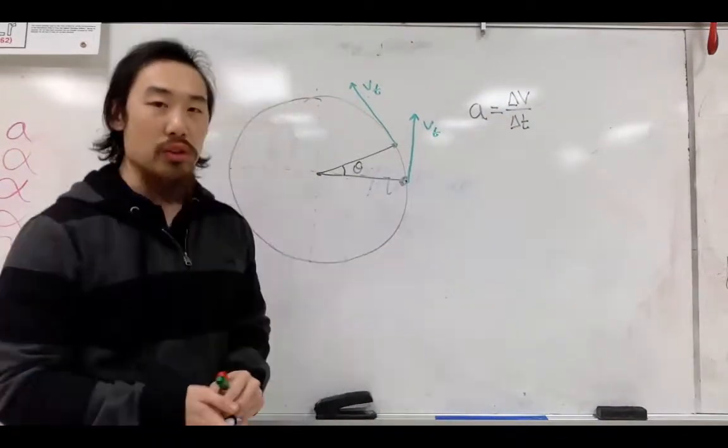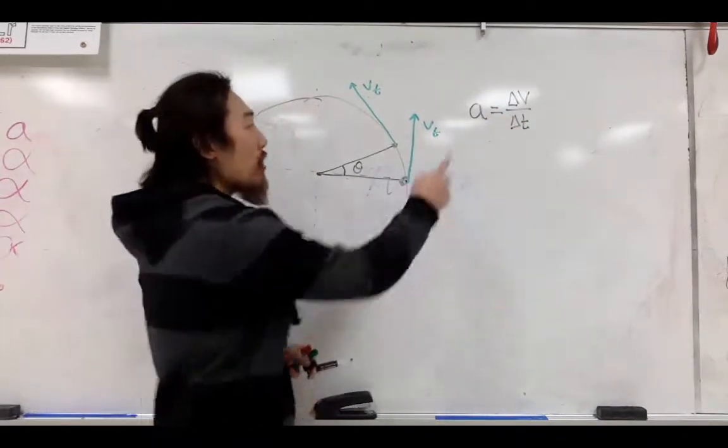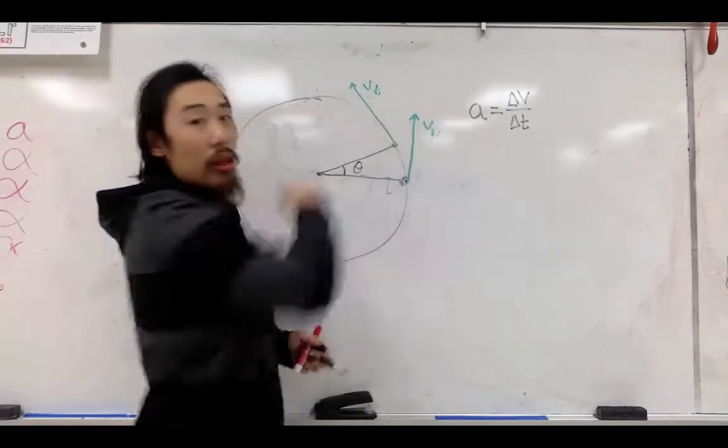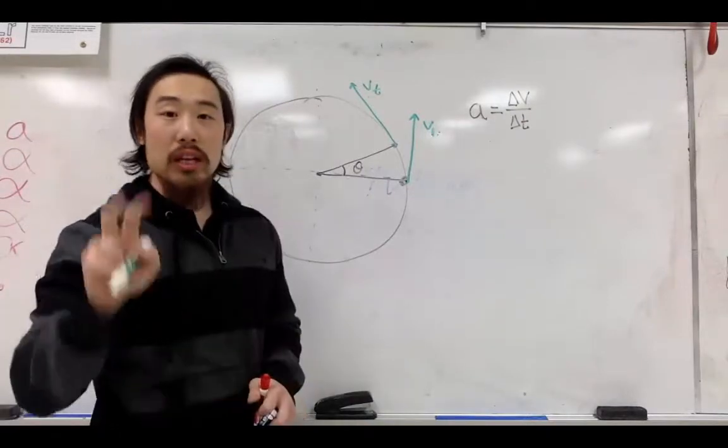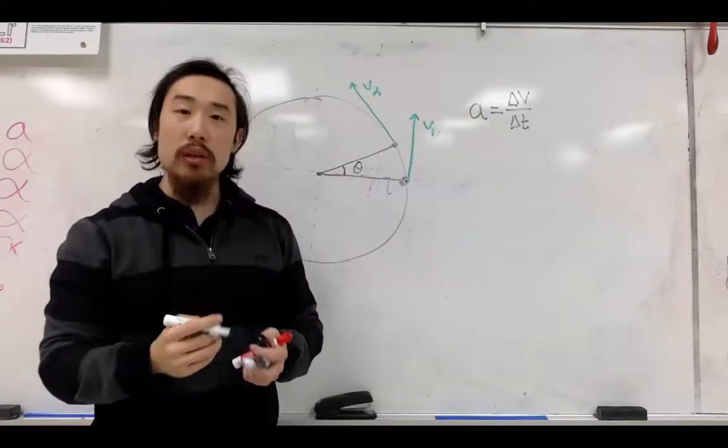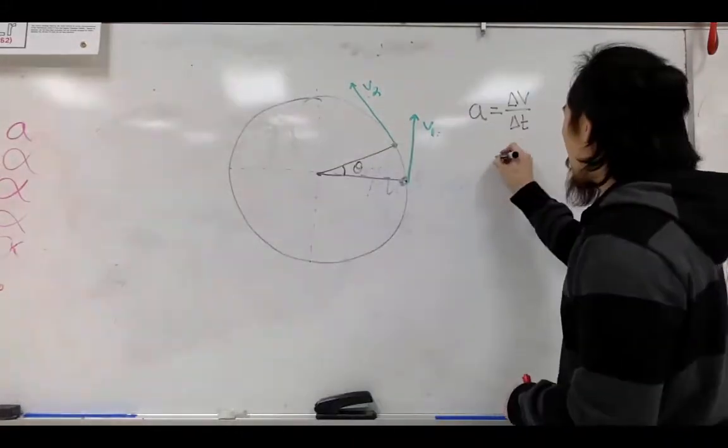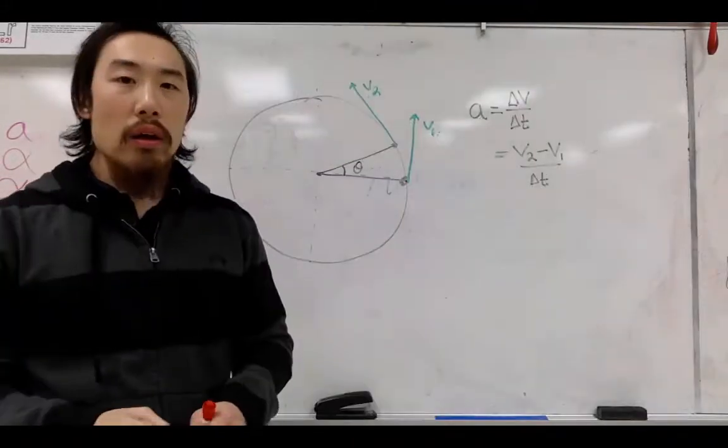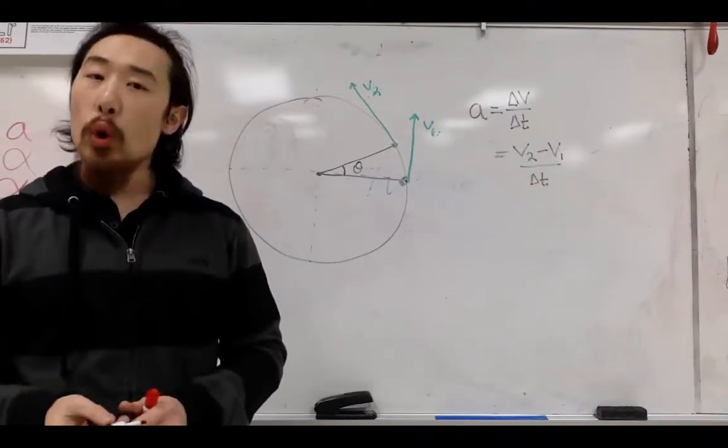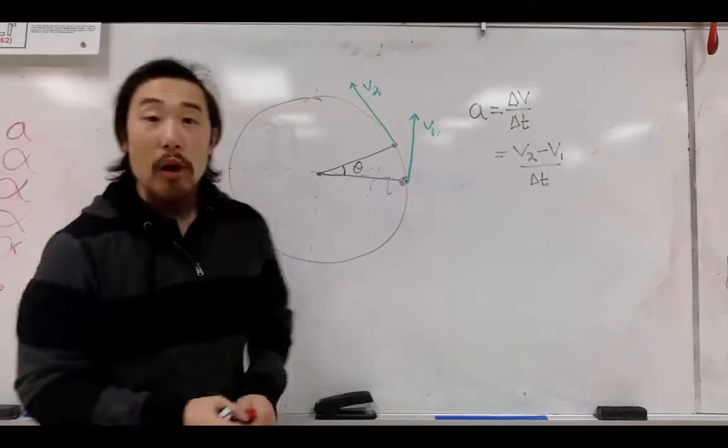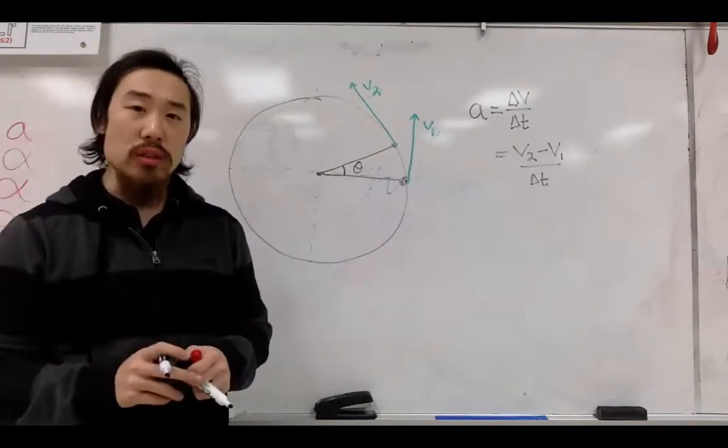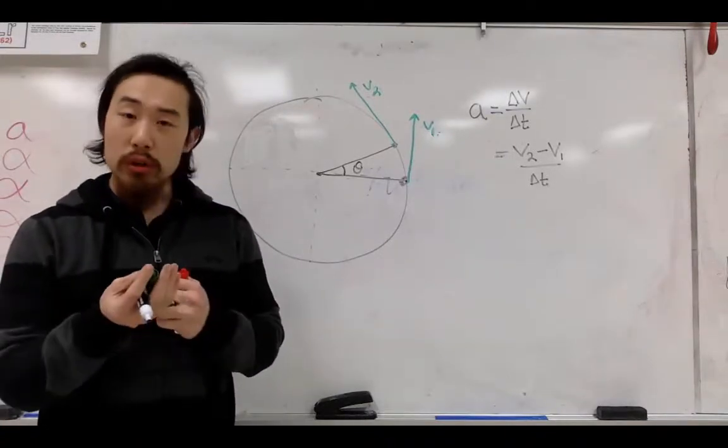So let's give our velocity vectors a label. I'm going to call this velocity velocity 1, and I'm going to call this velocity vector velocity 2. So now I can rewrite this equation as such. The acceleration is equal to the final velocity v2 minus the initial velocity v1 over a change in time. Now, velocities are vectors, and what we can do with vectors is we can add and subtract them using the tip-to-tail method. And so we're going to try that now.